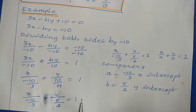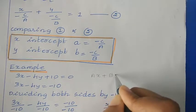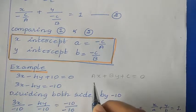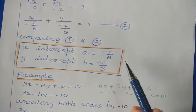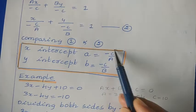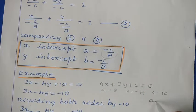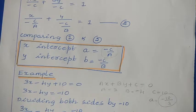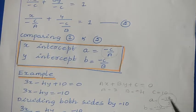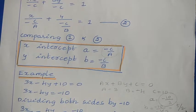Alternatively, you can directly use the formula. Comparing the equation 3X minus 4Y plus 10 equal to 0 with the general form AX plus BY plus C equal to 0, we get A equals 3, B equals minus 4, and C equals 10. The X intercept is minus C over A, which is minus 10 over 3. The Y intercept is minus C over B, which is minus 10 over minus 4, giving 5 over 2.